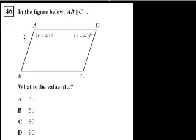We're on problem 46. In the figure below, line segment AB is parallel to C. I think there's a typo here. I've got to believe this has got to be CD. That's got to be a typo because you can't be parallel to a vertex. They say, what is the value of x?